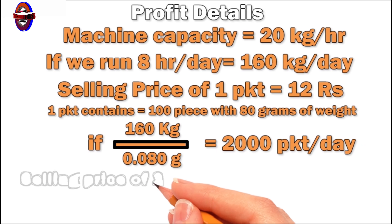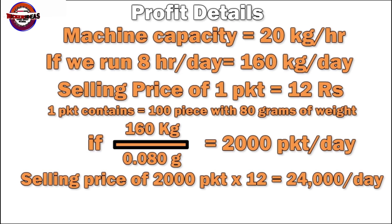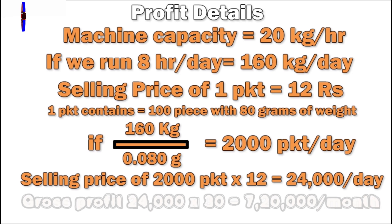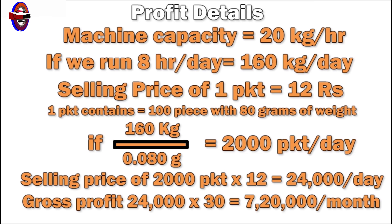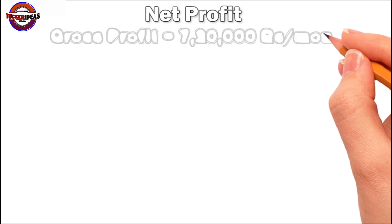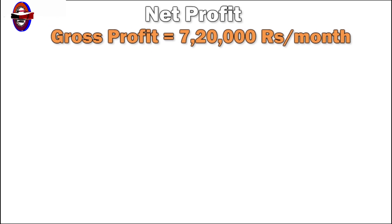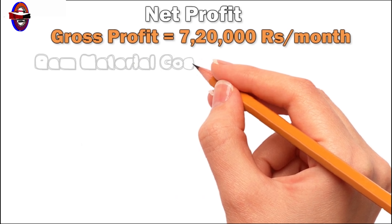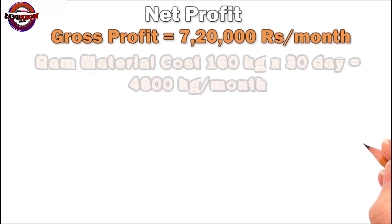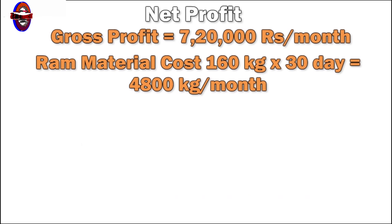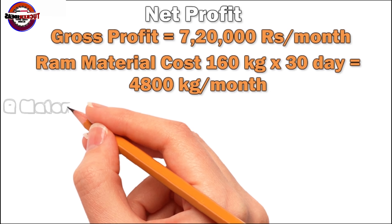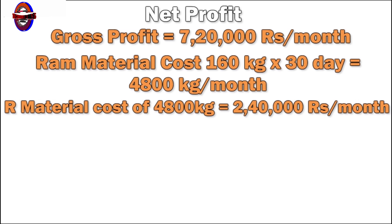If you look at the selling price, we can sell for 24 rupees. We can sell 24 rupees in a month. This is the gross profit — we can get a gross profit. There are 4,000 grams at 1.5 grams. If you look at the raw material cost, it is 40,000 rupees.